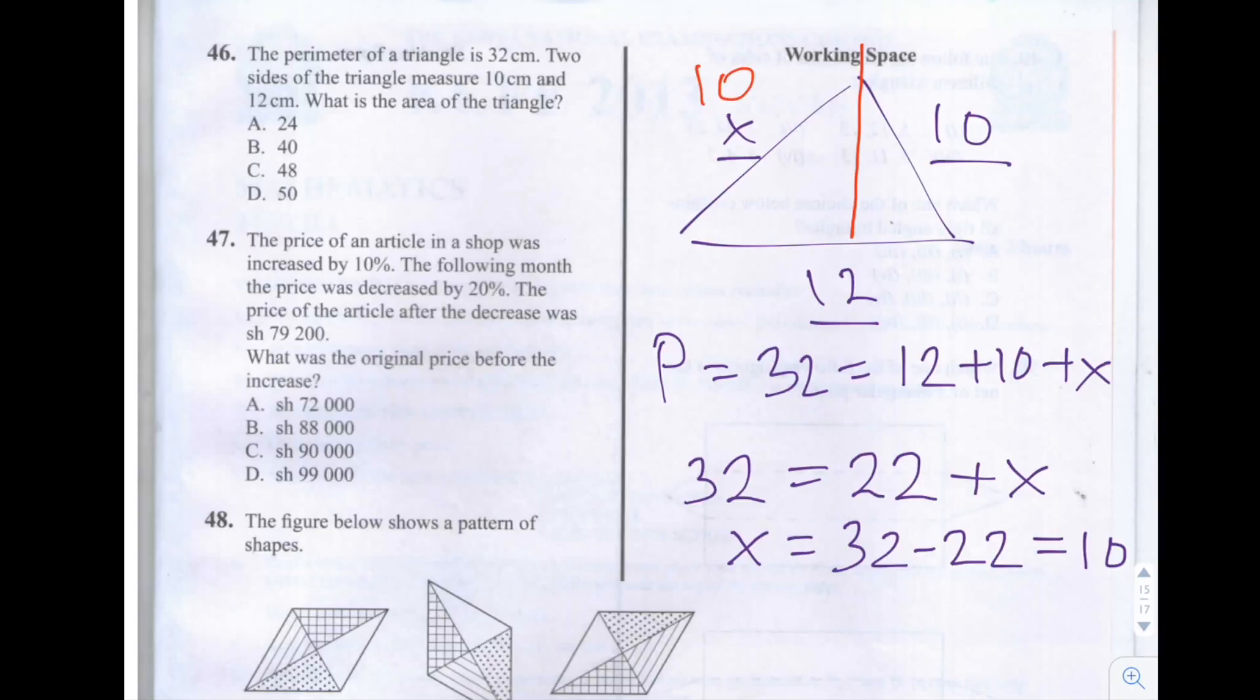And this perpendicular represents the height of the triangle from here to here. This is H, the height of the triangle.